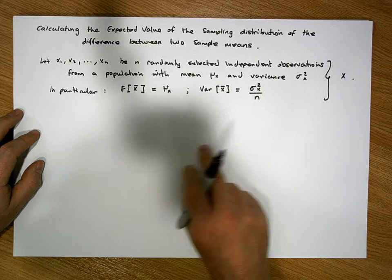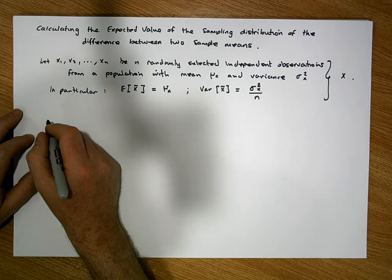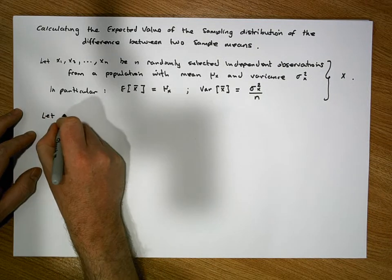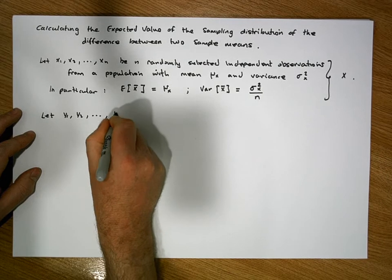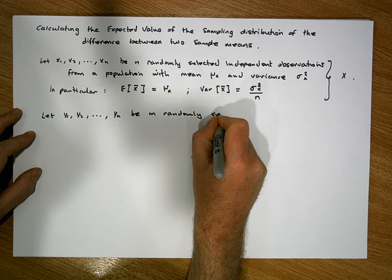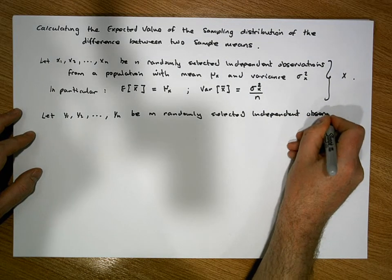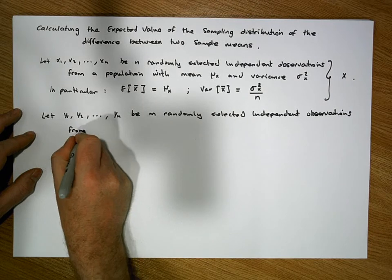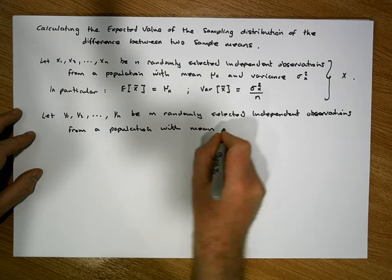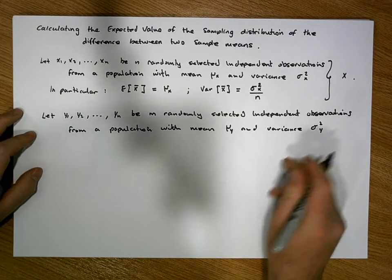So this is our first random variable x, with expected value mu of x and variance sigma squared of x over n. In a similar way, let's choose a second random variable, independent of the first. Let y1, y2 through to ym be m randomly selected independent observations drawn from a population with mean mu of y and variance sigma squared of y.